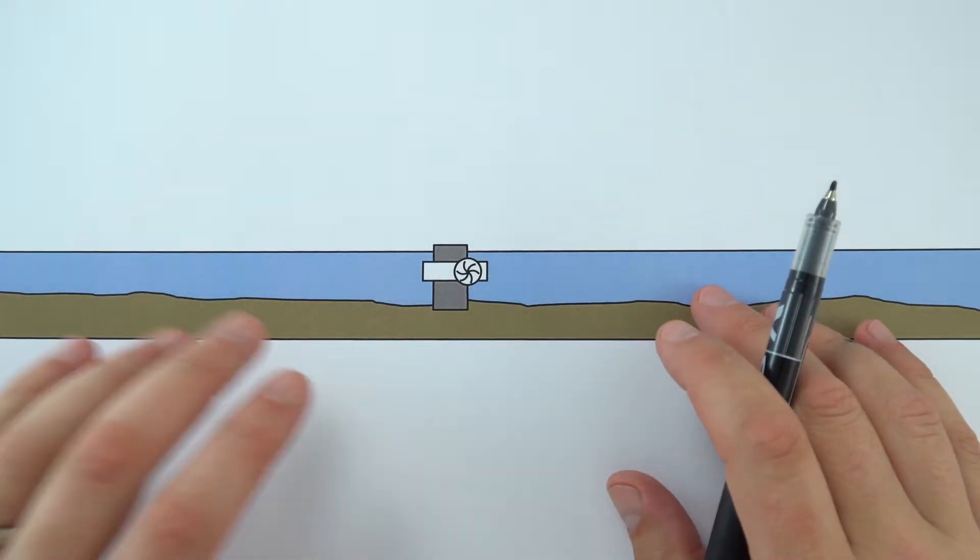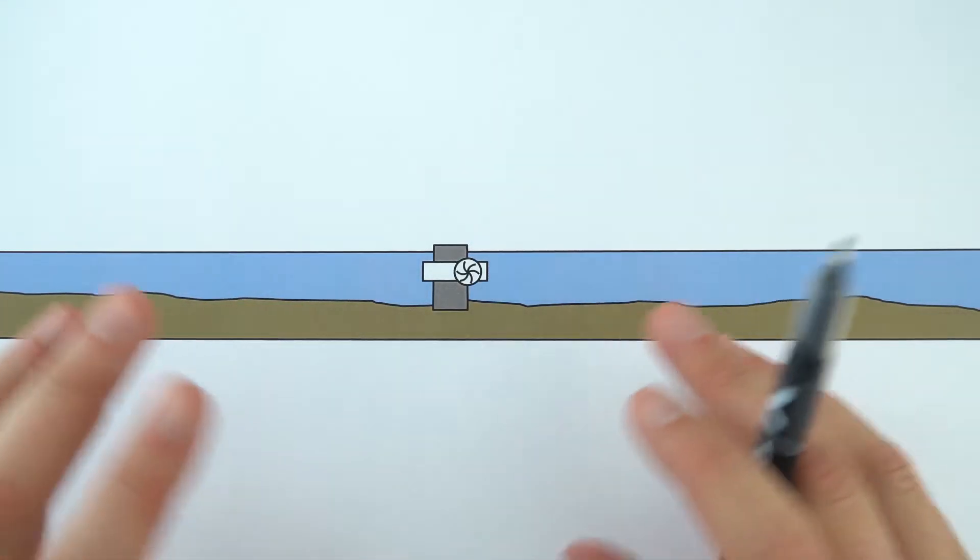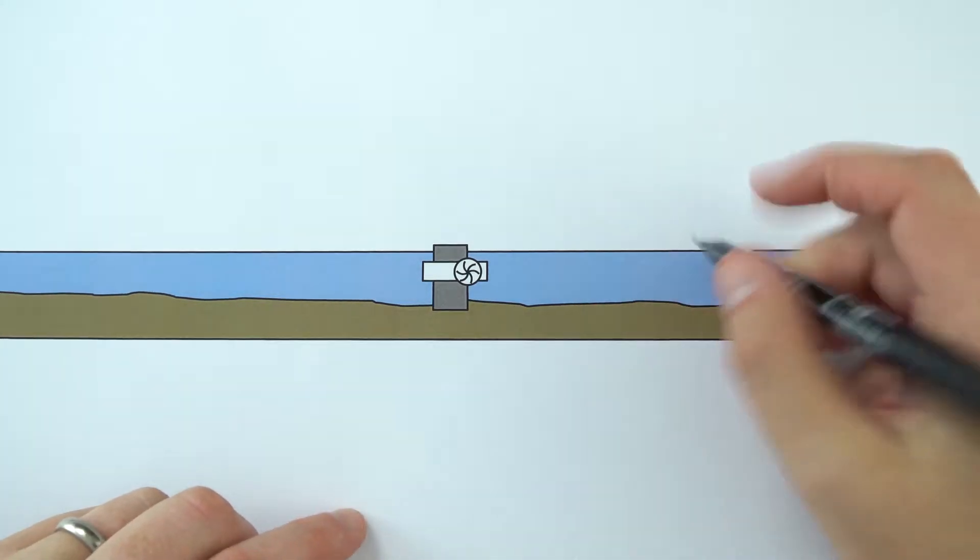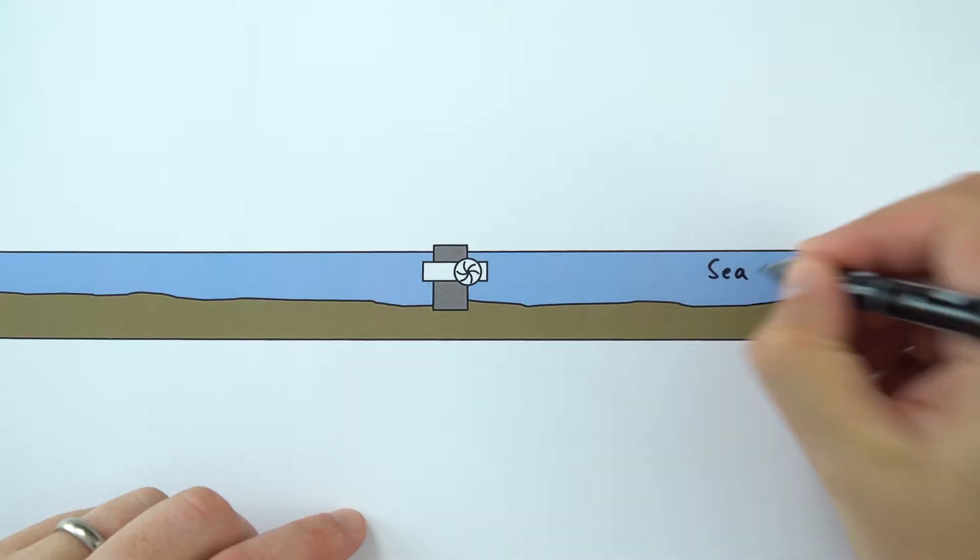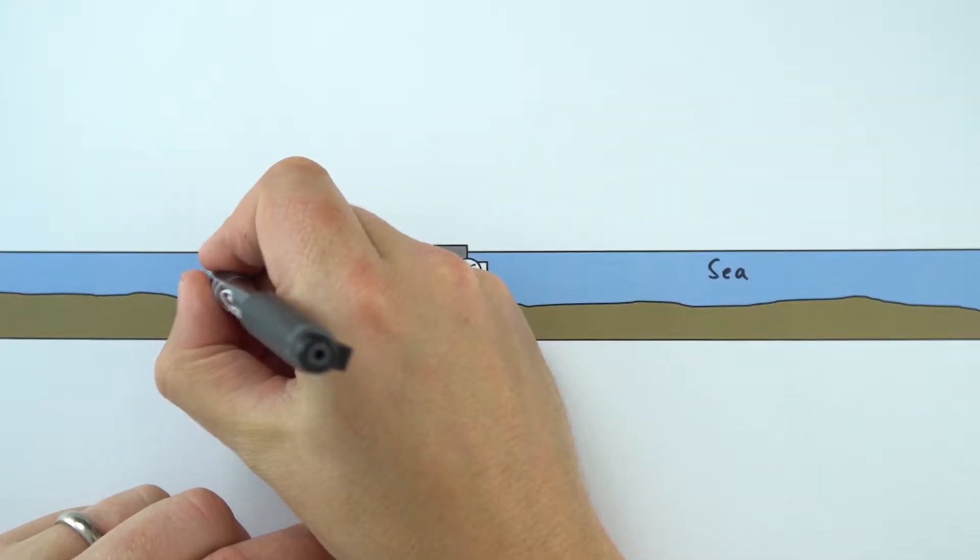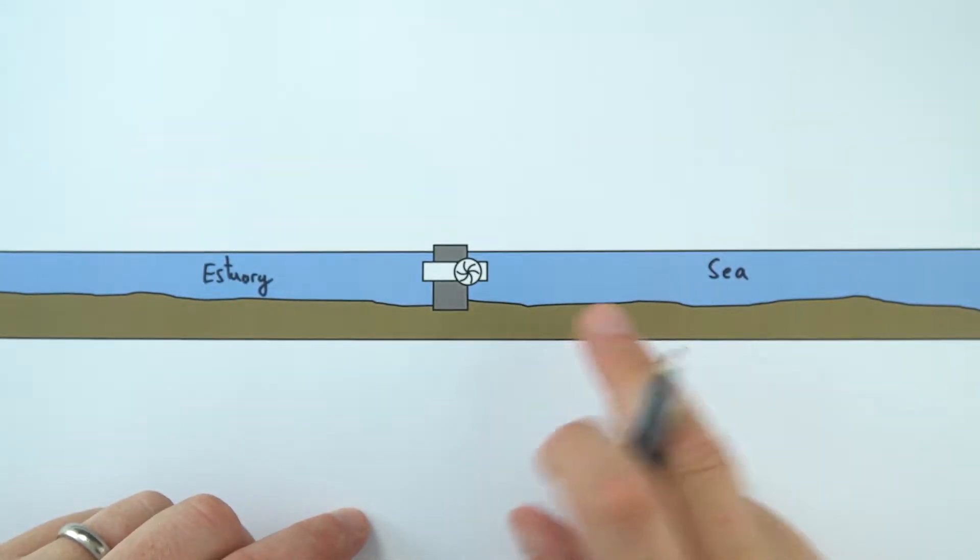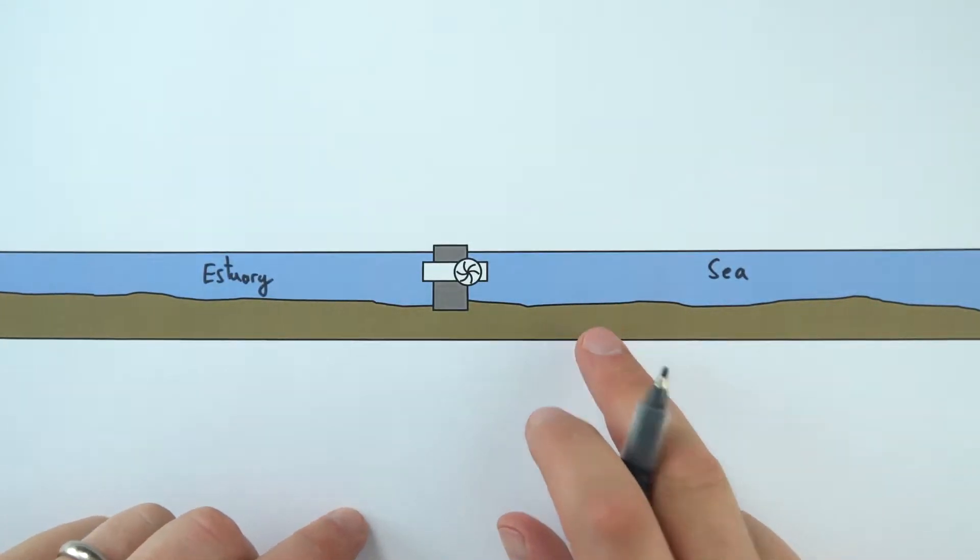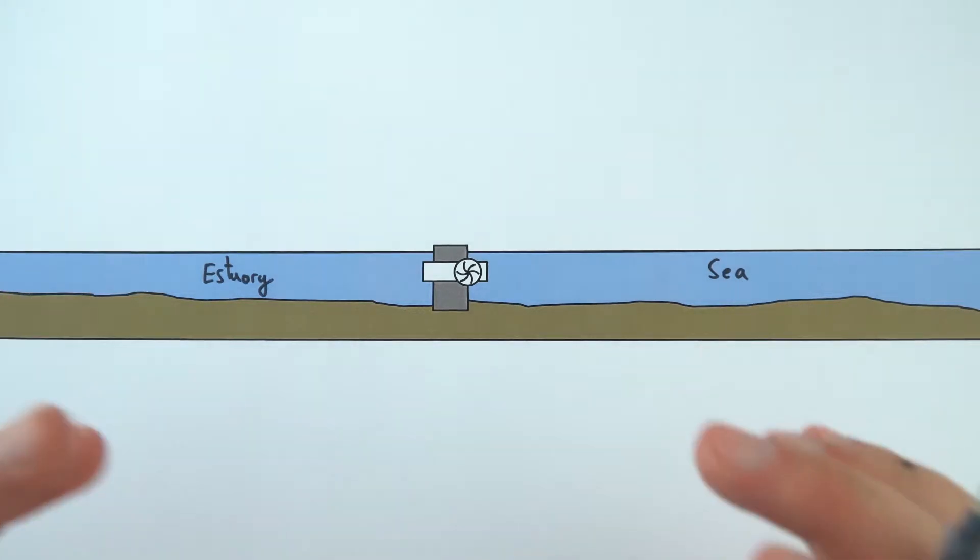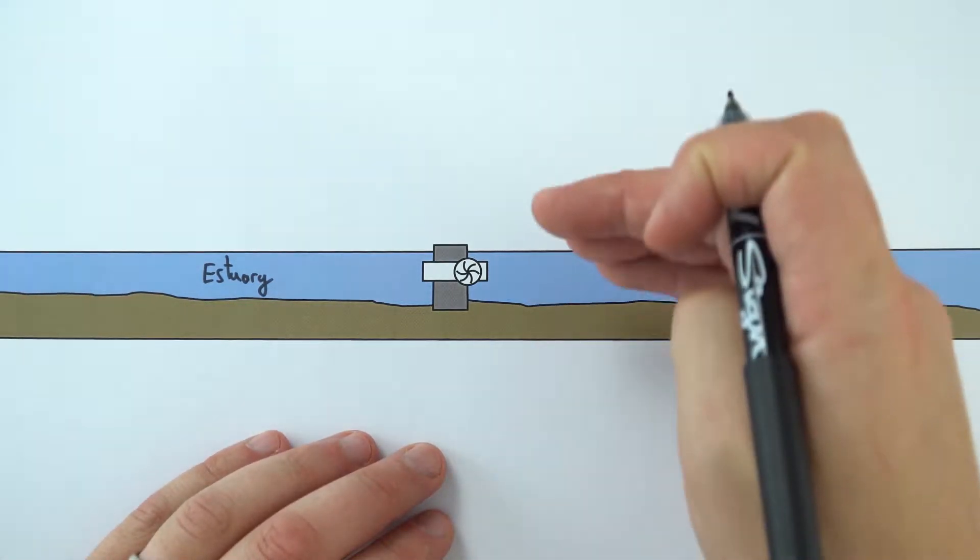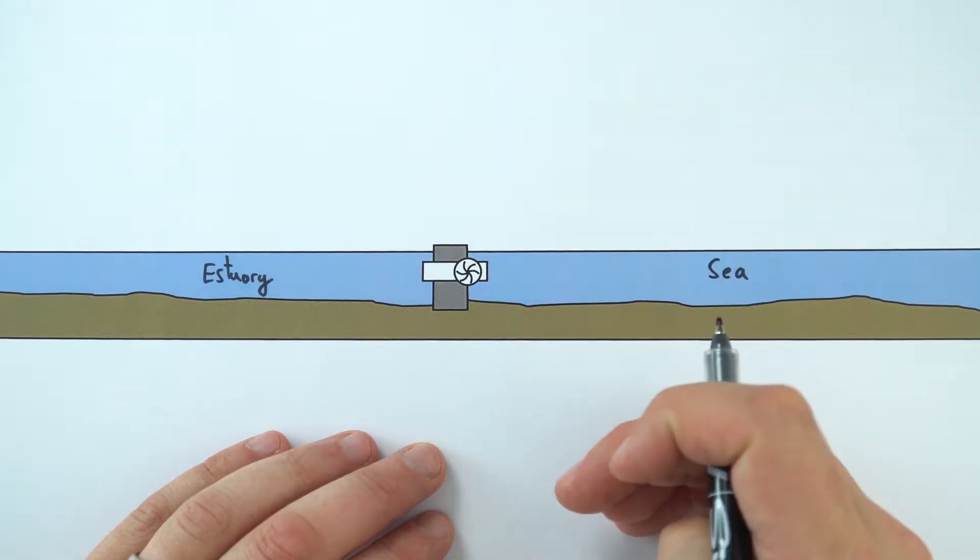But hydroelectricity only works where you've got mountainous terrain, and actually a lot of places in the world are surrounded by the sea. So what we have over here is the sea, and over here what we have is an estuary, which is basically a river that's flowing out into sea. Now at the moment what we have is high tide, and the good thing about tides is that they're very predictable. We know about one or two times a day we're going to have the water come up and then down.